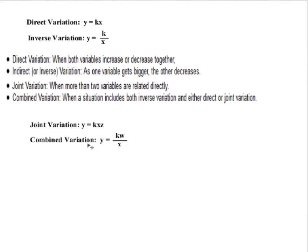Similarly with combined variation, y is equal to k times w — that's the direct variation part — over x, which is the inverse variation part of a combined variation. I think the best way to go through this is to just work through a few examples of joint and combined variation.